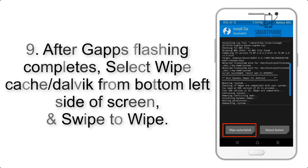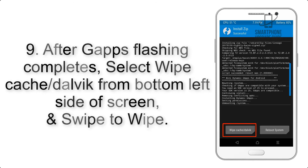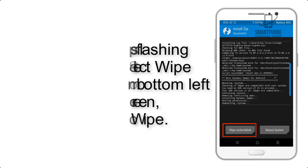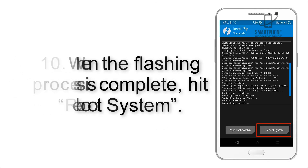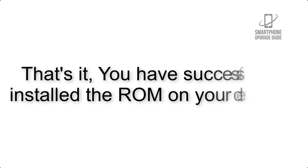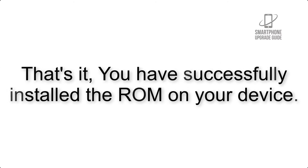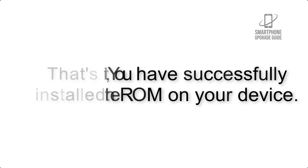Step 8: Flash the GApps zip package in the same manner. Step 9: After GApps flashing completes, select Wipe Cache and Dalvik from the bottom left side of the screen and swipe to wipe. Step 10: When the flashing process is complete, hit Reboot System. That's it — you have successfully installed the ROM on your device.